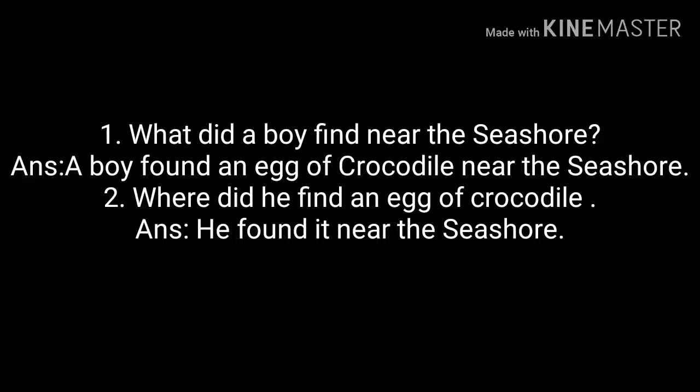'Where did he find an egg of a crocodile? He found it near the seashore.' If we have proper nouns or common nouns in the question, we can use their pronouns in the answers. Now, 'Have you ever heard a crocodile flying?' is a yes or no type of question. The expected answer is: 'No, I have never heard a crocodile flying.' In such questions, we have the auxiliary verb 'have' and the main verb 'heard,' and we use the same words when forming the answer.